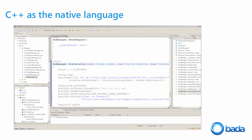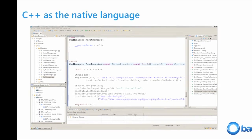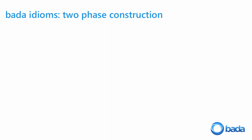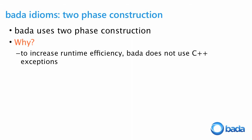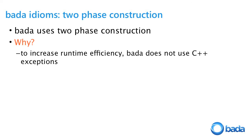One of the most important idioms — familiar to anyone with Symbian C++ experience, though they may groan when they see it — is two-phase construction. Bada uses two-phase construction. The reason is that Bada does not support standard C++ exceptions, due to runtime efficiency. Instead, we handle errors by checking the return value of functions.